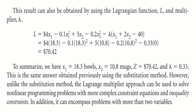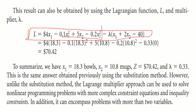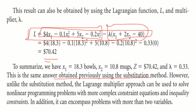This result can also be obtained using the Lagrangian function L and multiplier lambda directly. To summarize: x₁ = 18.3, x₂ = 10.8, z = 70.42, and lambda = 0.33. This is the same answer obtained previously using the substitution method. Unlike the substitution method, the Lagrangian multiplier approach can be used to solve nonlinear programming problems with more complex constraint equations, inequality constraints, and problems with more than two variables. It is therefore a very important technique.